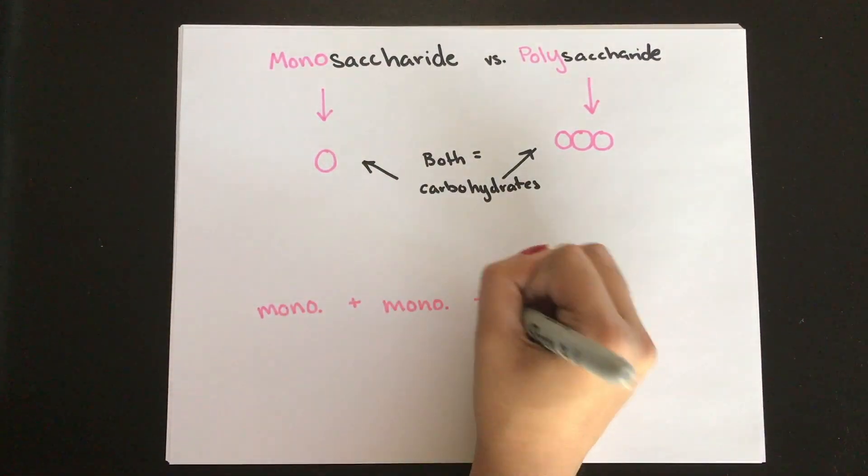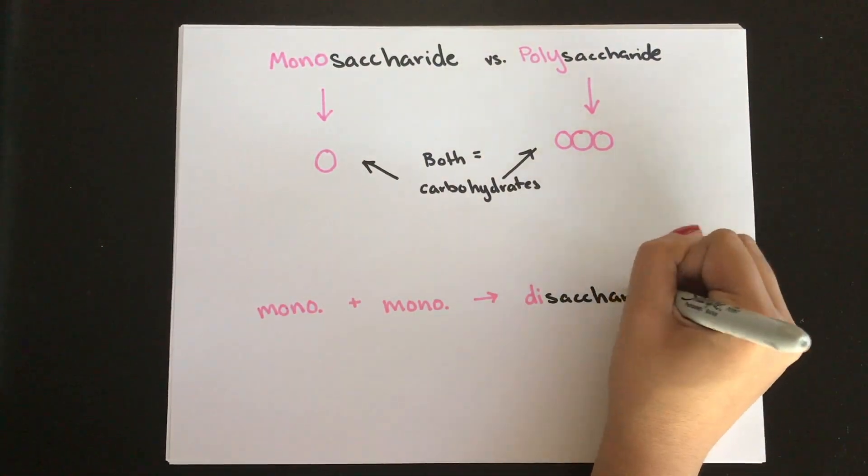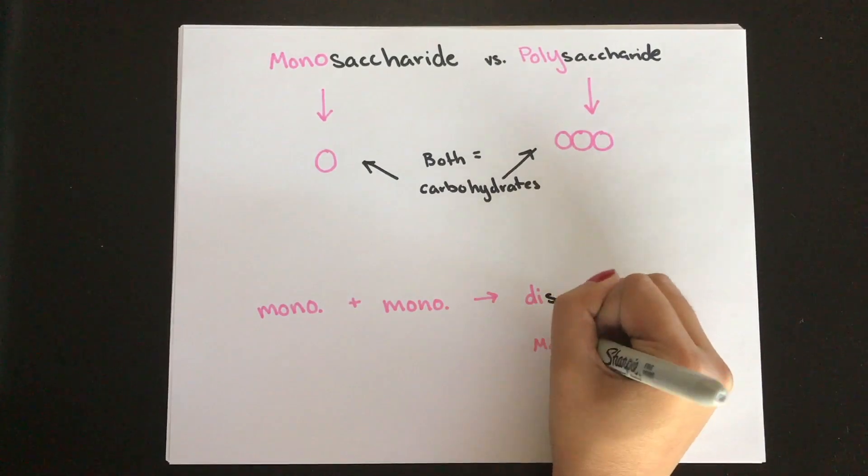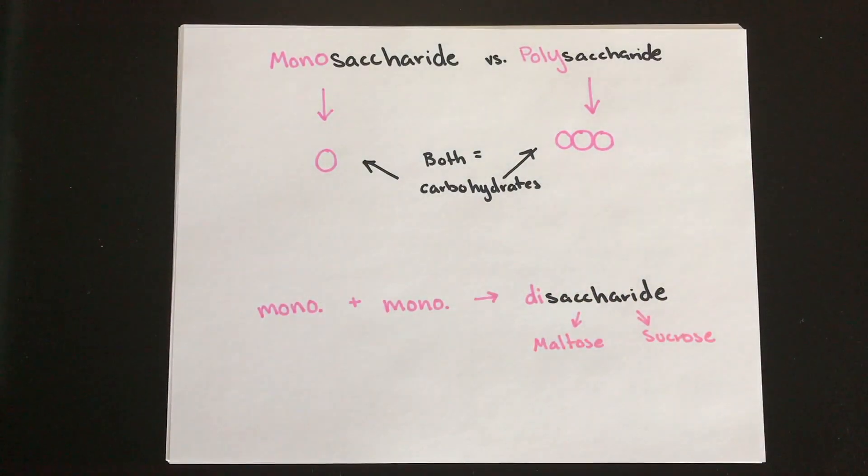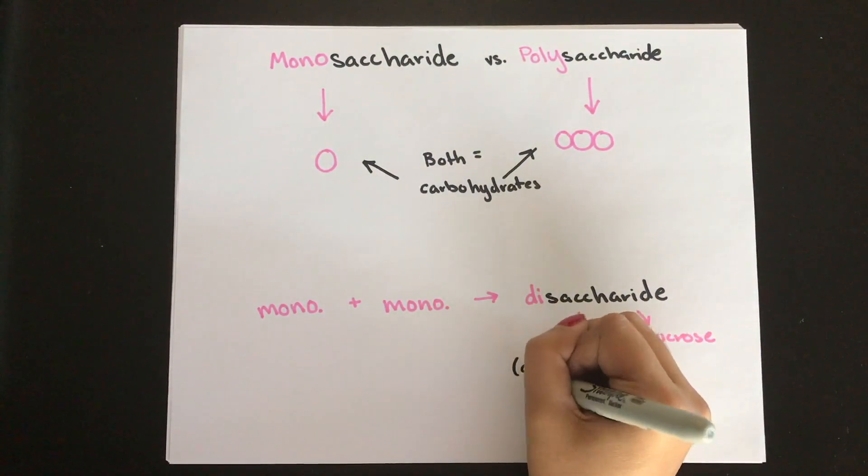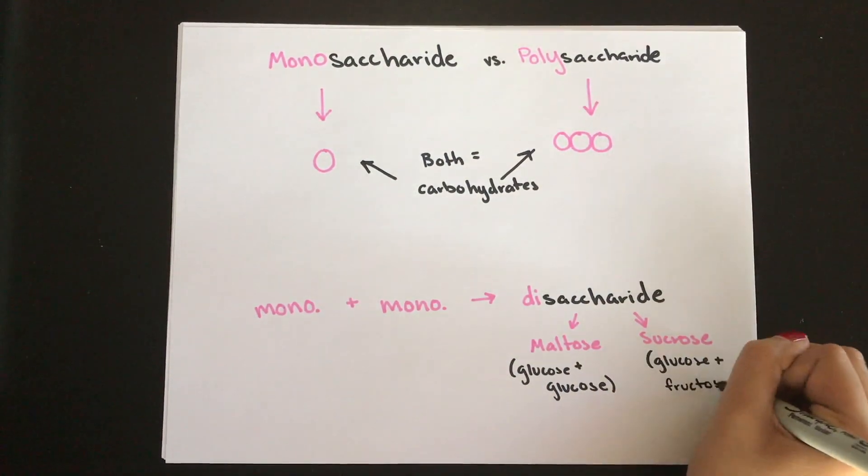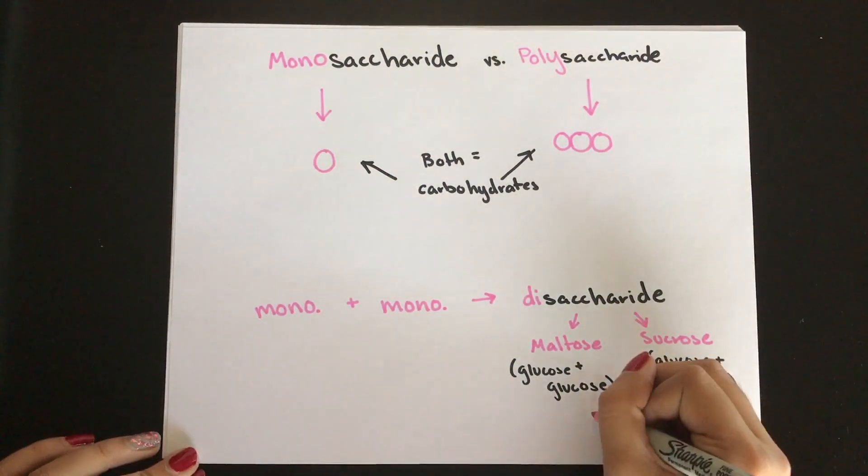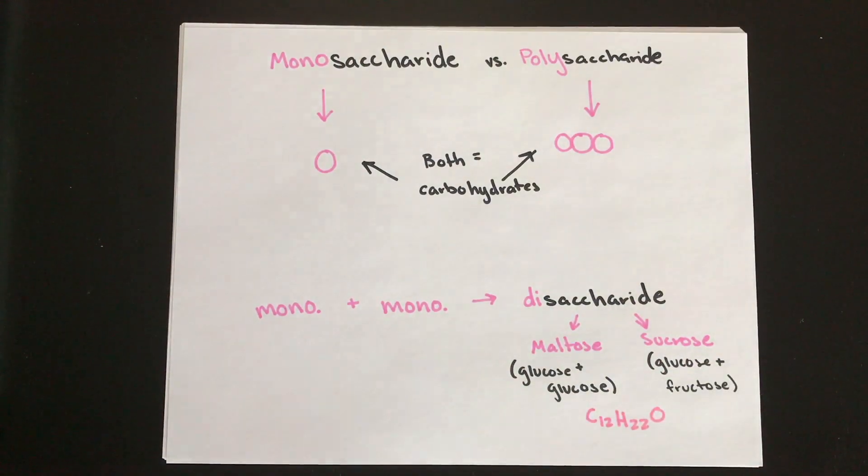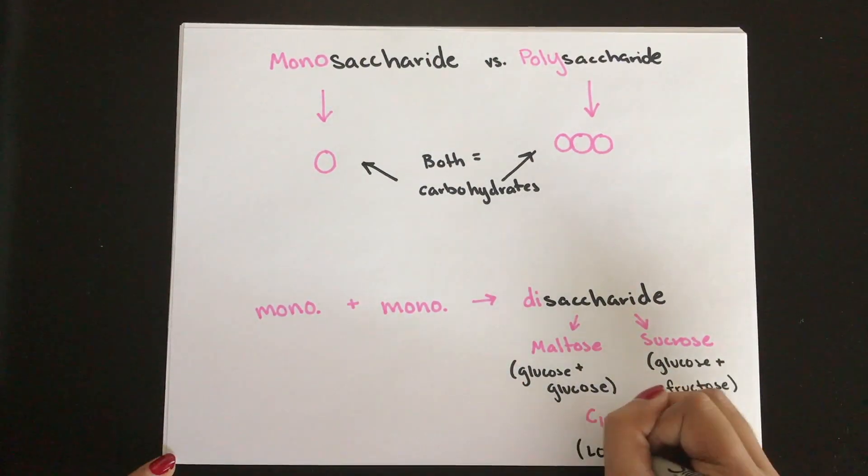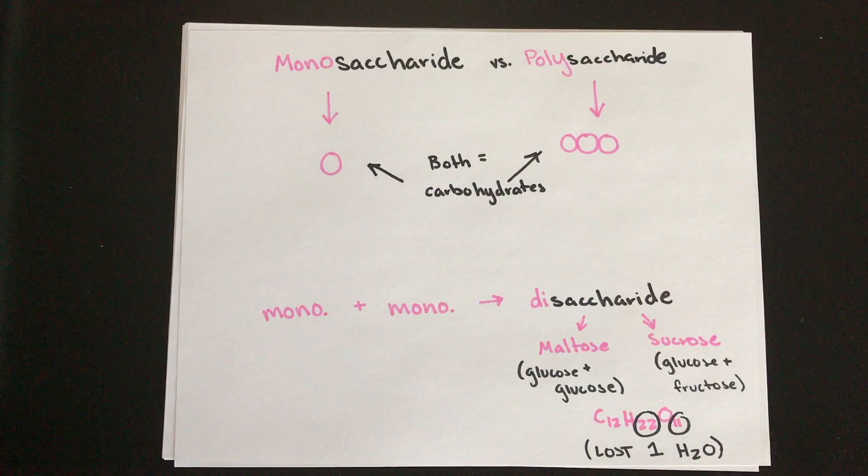If you have two monosaccharides that are linked, they're called disaccharides. Examples of disaccharides are maltose and sucrose. Maltose occurs when two glucose molecules are added together, and sucrose occurs when a glucose and a fructose are added together. Both of these have the same chemical composition of C12H22O11, and remember that this isn't C12H24O12, because they lose one H2O in the process.